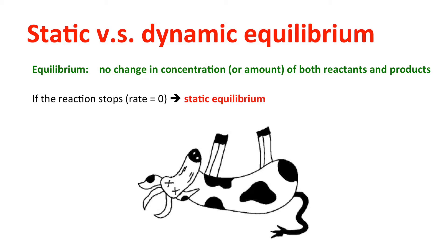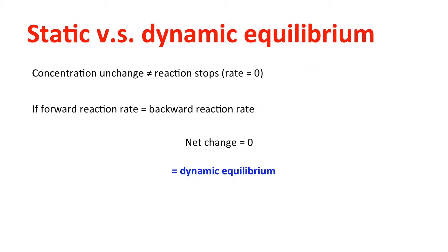But how can concentration remain unchanged while the reaction still goes on? The answer is if the reaction can go in both ways. If the forward reaction rate becomes the same as the backward reaction rate, then there is no net change. For example, if the forward reaction consumes five reactants but the backward reaction gives back five reactants, the net change is zero. We call this kind of equilibrium dynamic.